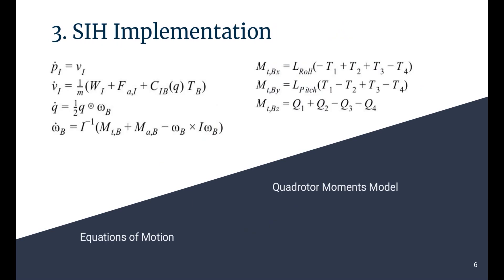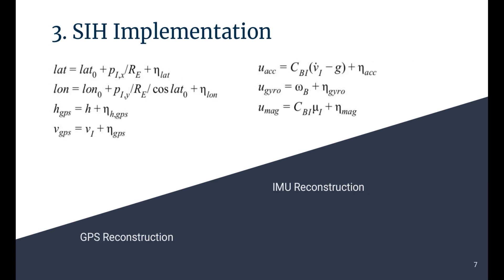So this brings us to the implementation of the SIH. So what do we need? We need the equations of motion of a rigid body, with update for the inertial position, inertial velocity, the attitude which is described by the quaternion Q, and the body rate omega b. We also need a model for the quadrotor, mainly how the quadrotor is generating forces and moments. We also need to reconstruct the sensor signals such as GPS or IMU and corrupt them with Gaussian noise. Don't worry, you can find all of these equations in the SIH documentation in the dev guide. There is a PDF report detailing the models used by the SIH.